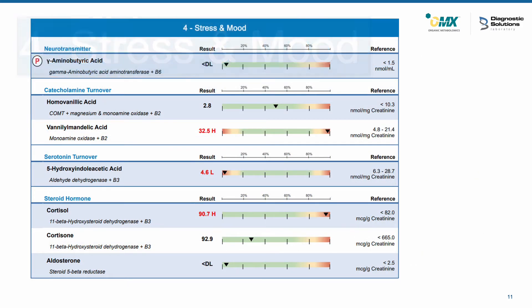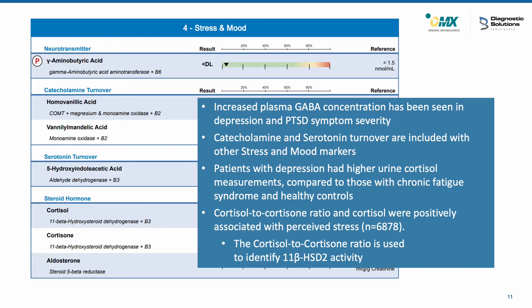Section 4, stress and mood, looks at GABA. It looks at catecholamine and serotonin turnover again, so you can see them with the other stress and mood markers. It also looks at cortisol, cortisone, and aldosterone.